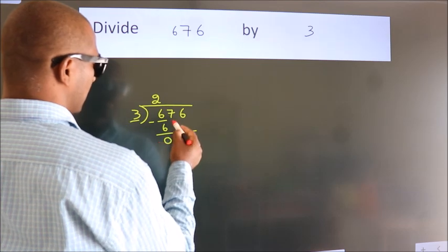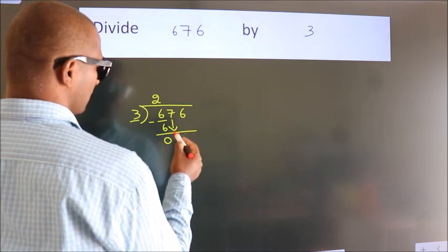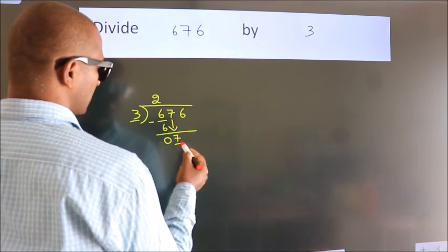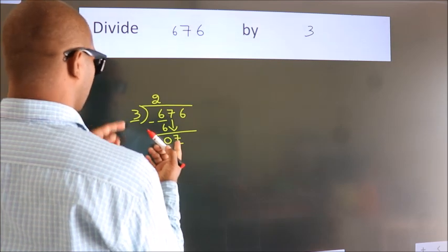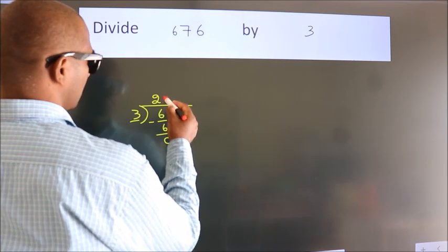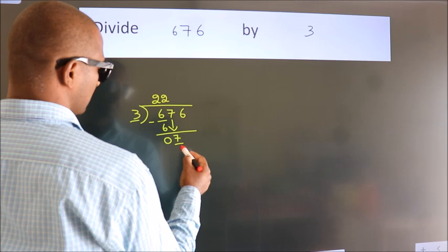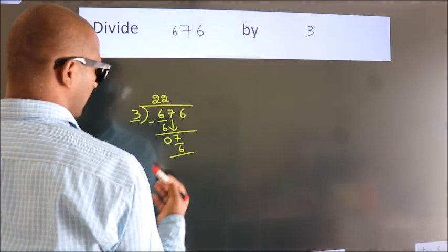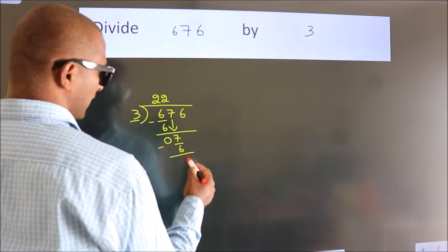After this, bring down the beside number. So 7 down. So 7. A number close to 7. In 3 table is 3 2s, 6. Now we subtract. We get 1.